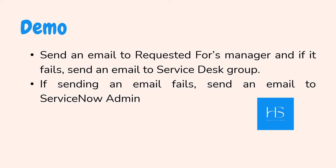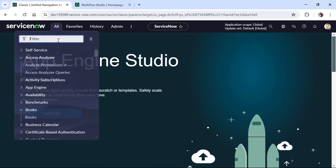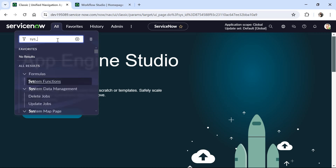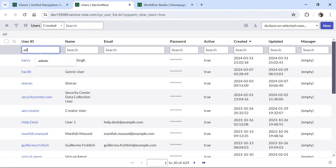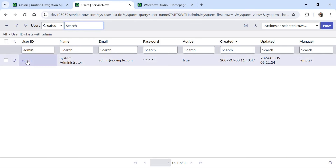For this demo, we will choose a requested-for or end user who doesn't have a manager. I have also updated the email ID of the service desk as an invalid email ID. Now in the ServiceNow instance, I will go to the user table — sys_user.list — and search for admin. You can see the manager field is empty, so it doesn't have a valid manager.